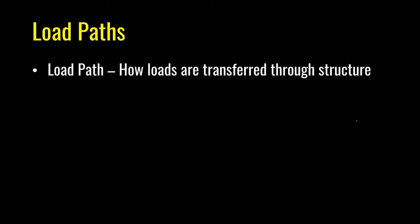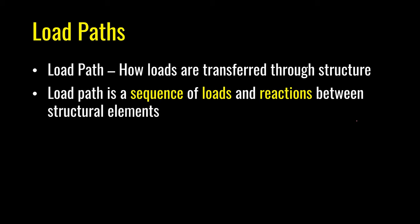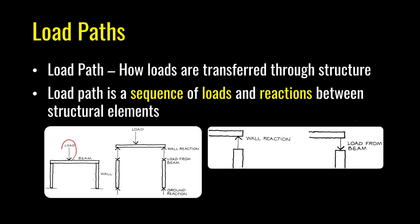Load path tells us how loads are transferred through a structure. Load path is a sequence of loads and reactions between structural elements. In a simple frame, a point load applied on a beam is transferred as wall reactions on the left and right sides, then taken by the columns, and finally transferred to the ground where the ground provides a reaction.